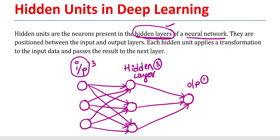These are called hidden units. Hidden units are the neurons present in the hidden layer of the neural network. This is the diagram of a neural network.